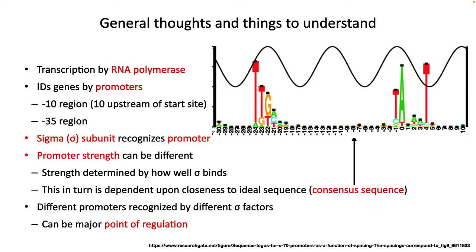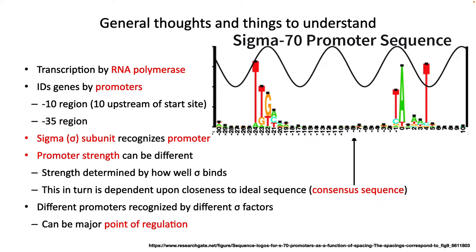The sigma subunit makes contact with the DNA and recognizes a consensus sequence. The promoter strength is dictated by how well sigma binds to the DNA, which in turn depends on how closely it matches the consensus sequence. Different sigma factors will recognize different promoters around the chromosome, and this can be a major point of regulation. The most common sigma factor, sigma 70, also has the most promoters around the genome.